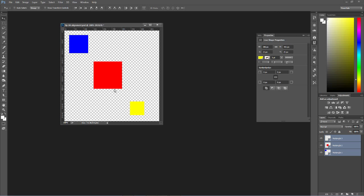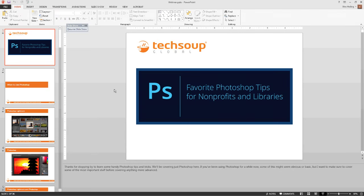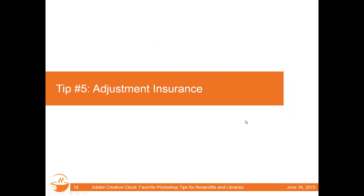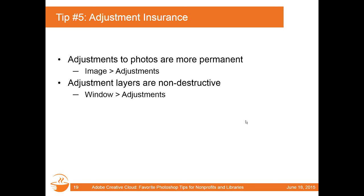Let's talk about adjustment layers — Tip 5: Adjustment Insurance. When making adjustments to a photograph — changing the hue, saturation, color, making it black and white, or slightly desaturated — it's very tempting to just make the changes directly. But you want to make your changes as non-permanent as possible, something that's non-destructive. You can make adjustments directly to a photograph if you're convinced that's what needs to be done and you're finished. But if you want to play around, adjust things, see how they look, tweak them — adjustment layers are a great way to do that.